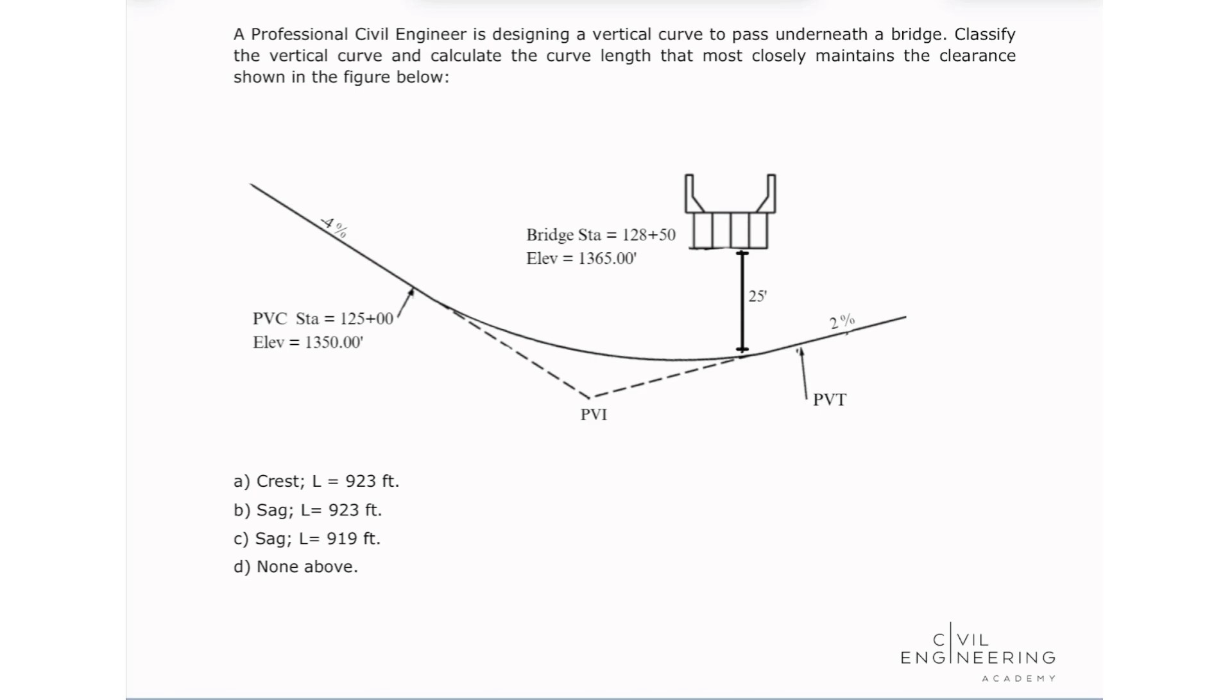So let's think about this curve. We need to classify this curve. We know that we have two kinds of vertical curves, crests and sags. This one is going to be a sag because its concavity is positive. So we already know this is a sag.